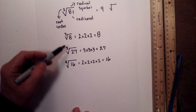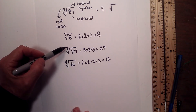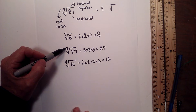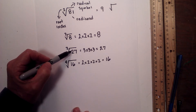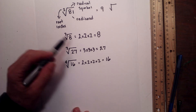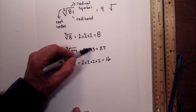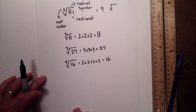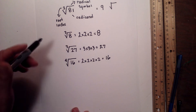Another example: here is the radical symbol. You have a root index of 3 and the radicand is 27, so you're going to find which number multiplied by itself 3 times equals 27. It just so happens that 3 times 3 times 3 is equal to 27.